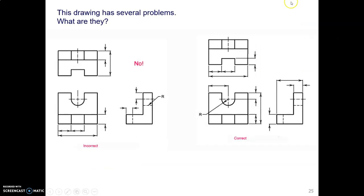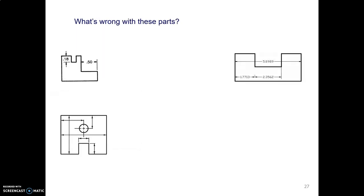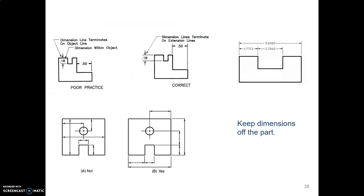This drawing on the left has a bunch of problems. It's got dimensioning to hidden lines, and it's got dimensioning features not in the view where they're true size and shape. What's wrong with these? Well, they have dimensions on the part, and we have to keep our dimensions off the part.